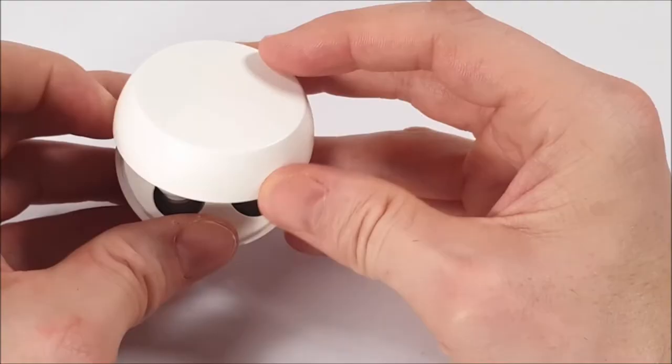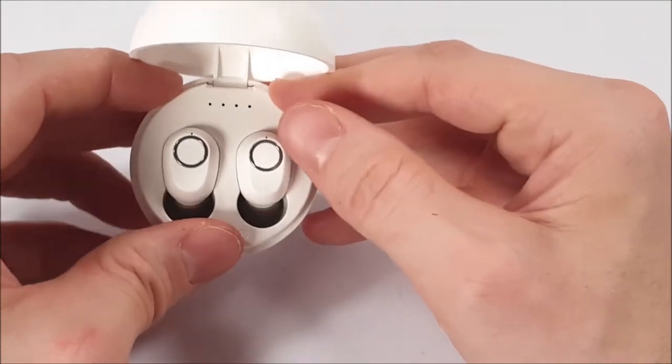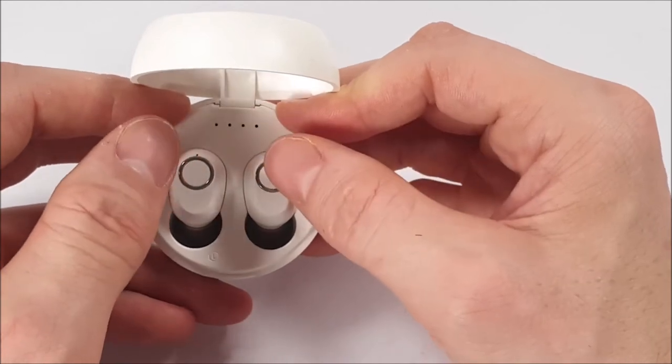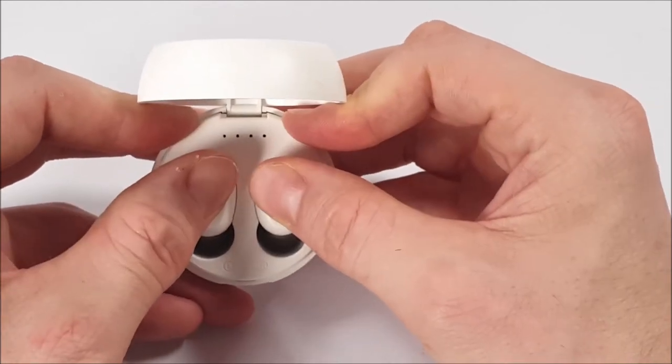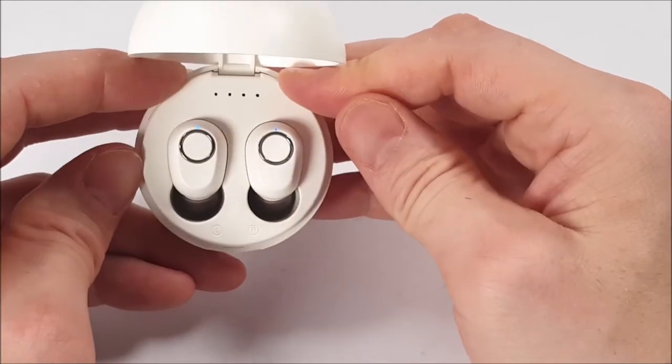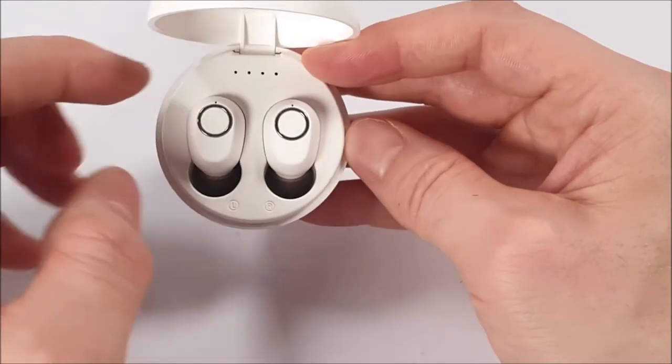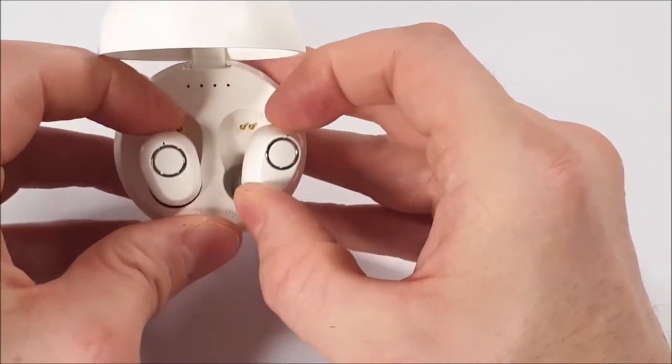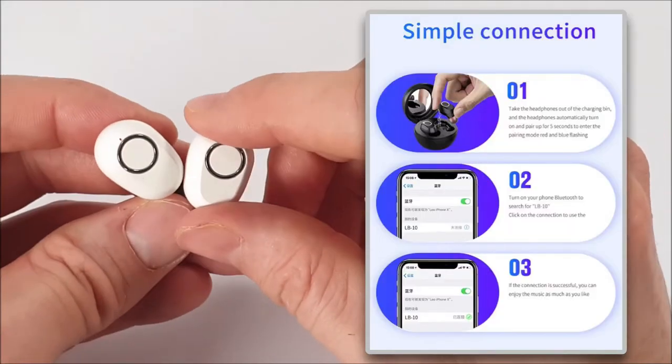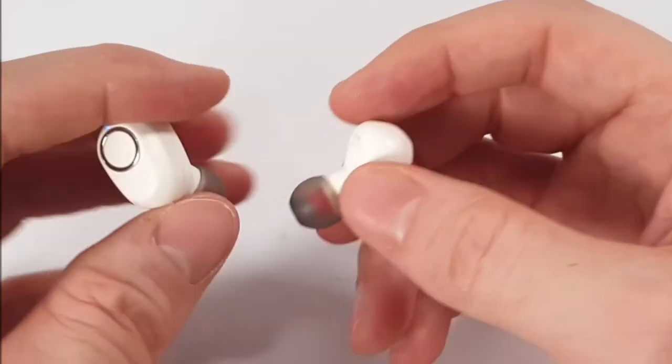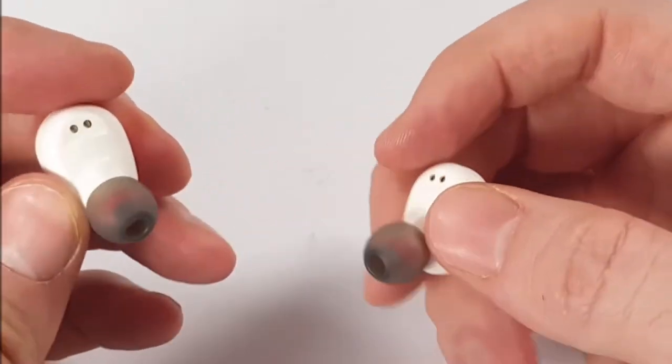When you first open up this charge case you will indeed need to turn these earphones on. That's simply done by pressing those side buttons, hold them for a few seconds. Now they're powered on, they will automatically go into pairing mode. Let's take them out and connectivity is real swift using that Bluetooth 5.0 technology.